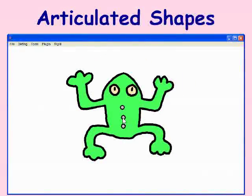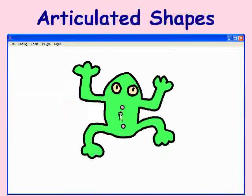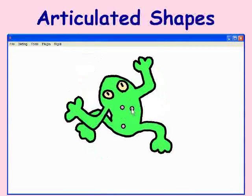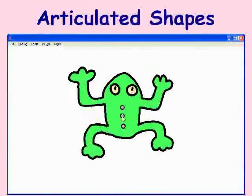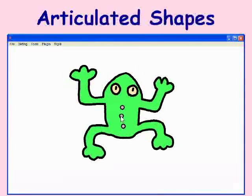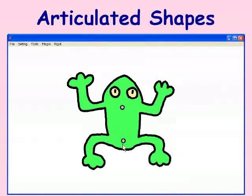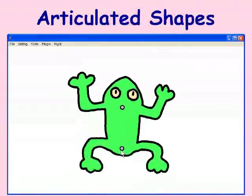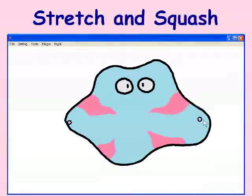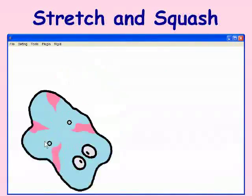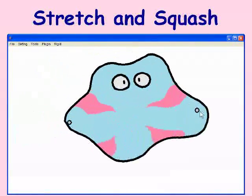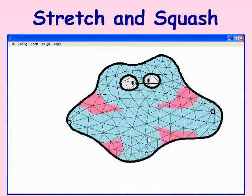You can deform the entire body by manipulating an inner vertex, which can be difficult using a mass spring method. Squash and stretch are also more natural with space warp methods.